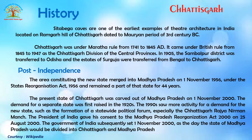Regarding the history of the state: the Sitabega Caves are one of the earliest examples of theater architecture in India, located in Ramgarh Hill, dated to the Mauryan period of the 3rd century BCE. Chhattisgarh was under Maratha rule from 1741 to 1845 AD, then came under British rule from 1845 to 1947 as the Chhattisgarh Division of Central Provinces. In 1905, the Sambalpur district was transferred to Odisha and the states of Surguja were transferred from Bengal to Chhattisgarh.